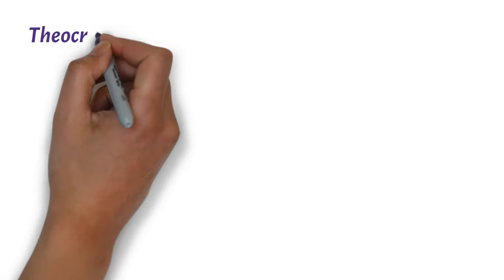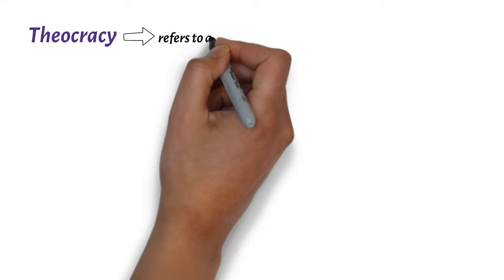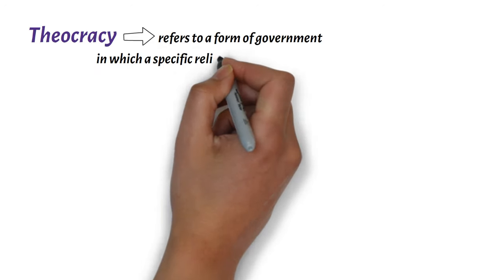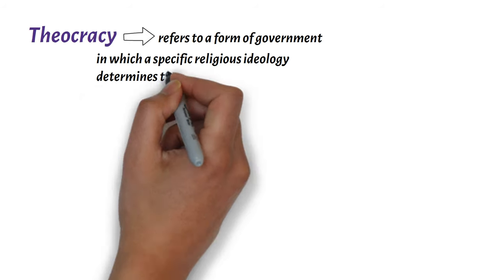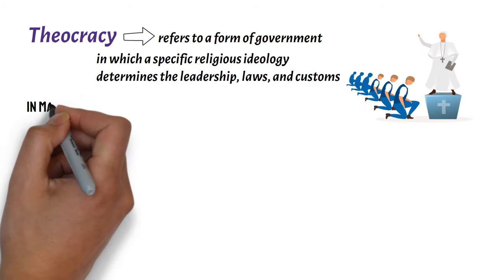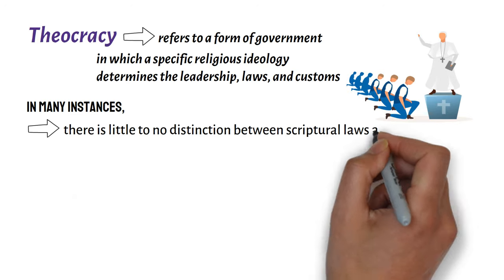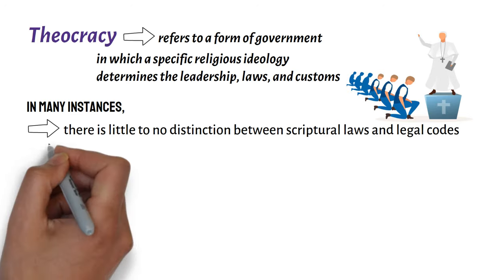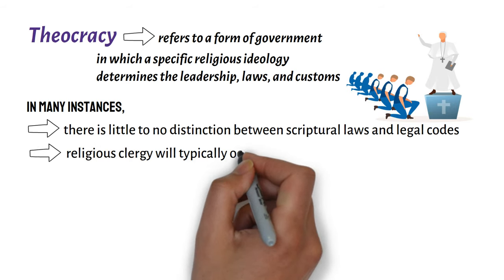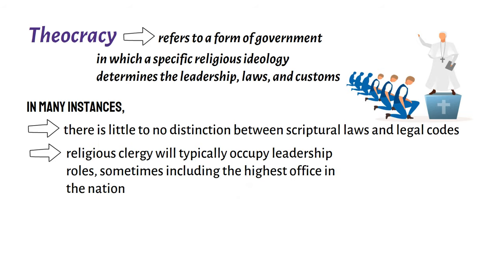On Theocracy. Theocracy refers to a form of government in which a specific religious ideology determines the leadership, laws, and customs. In many instances, there is little to no distinction between scriptural laws and legal codes. Likewise, religious clergy will typically occupy leadership roles, sometimes including the highest office in the nation.